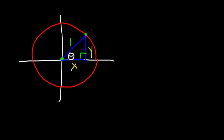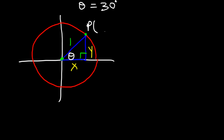Now let's say that angle corresponds to 30 degrees — so theta is 30. That would correspond to a point of root 3 over 2, which is the x value, and the y value would be 1 half.